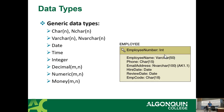In our employee table, we have employee name as VARCHAR(50), phone number as CHAR(15) — because we're storing it the same way every time with the same formatting, so it's always 15 characters. Email address as VARCHAR(100). As a person that's done this from experience, 100 is the bare minimum for email — go for 150. Hire date is a DATE, review date is a DATE, employee code is a CHAR(18).